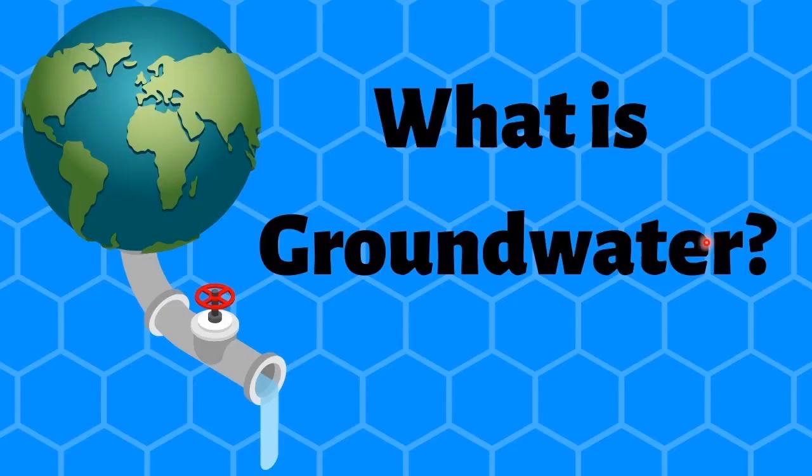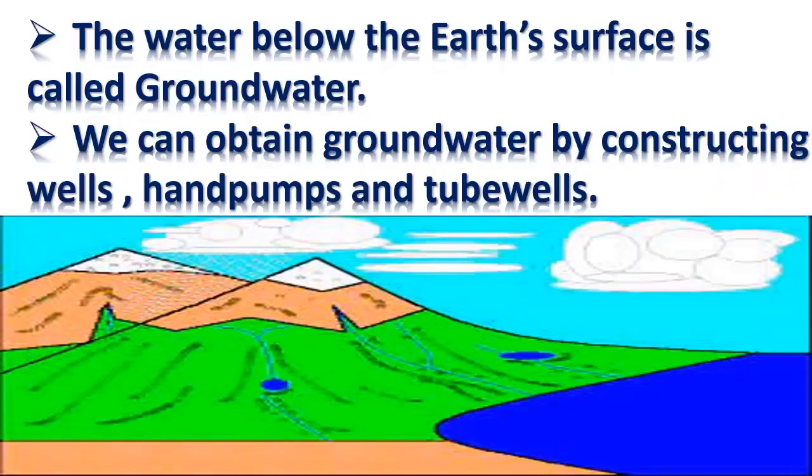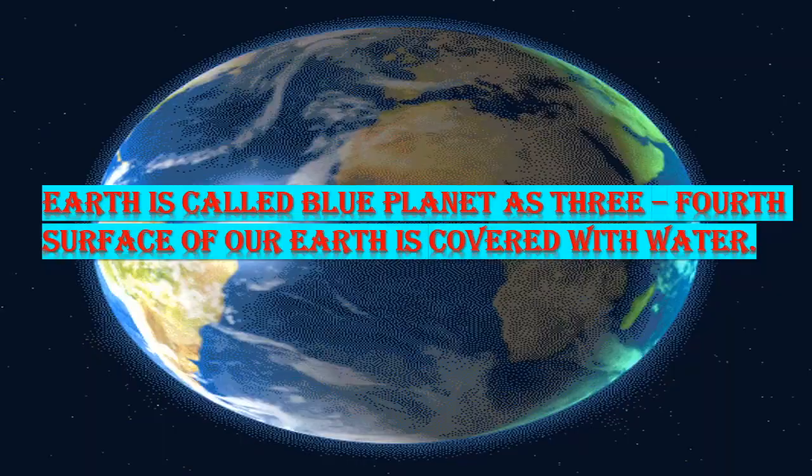Students, now let's learn what is groundwater. The water below the earth's surface is called groundwater. We can obtain groundwater by constructing wells, pumps, and tube wells.